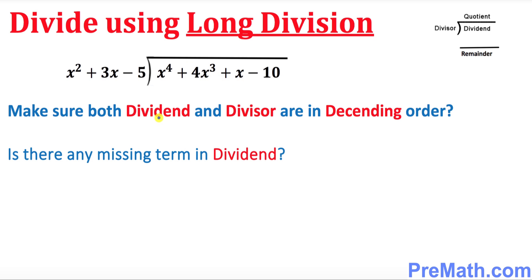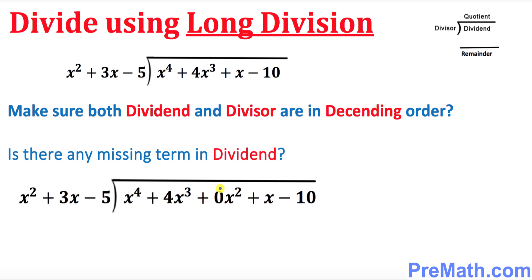The next thing is to see if there's any missing term in the dividend. We can see that the x² term is missing. So what I did is I put 0x² to make sure that the x² term also shows up. It's going to make our life a lot easier.